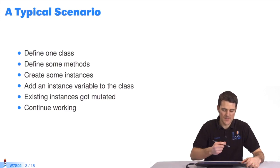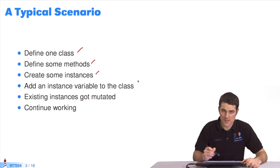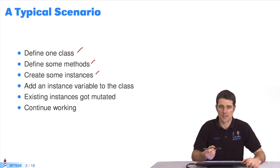Here's a typical case. We usually start by defining a class. Then we add methods and create instances for this class. Then we redefine the class and add new instance variables. So, what do we do with the instances that already existed when there was one less attribute?